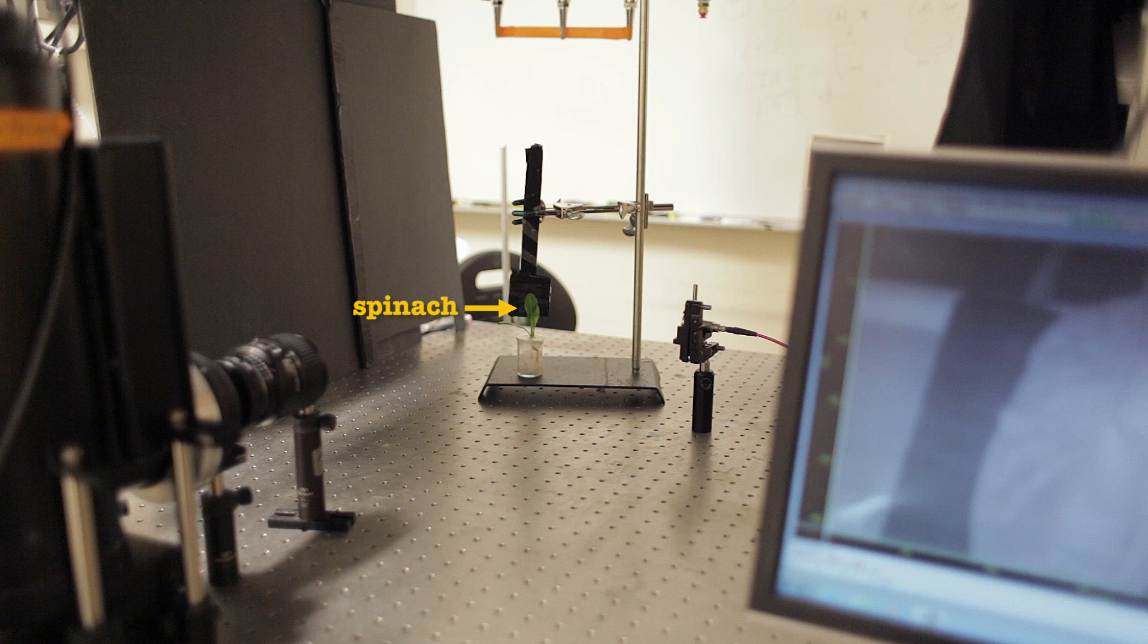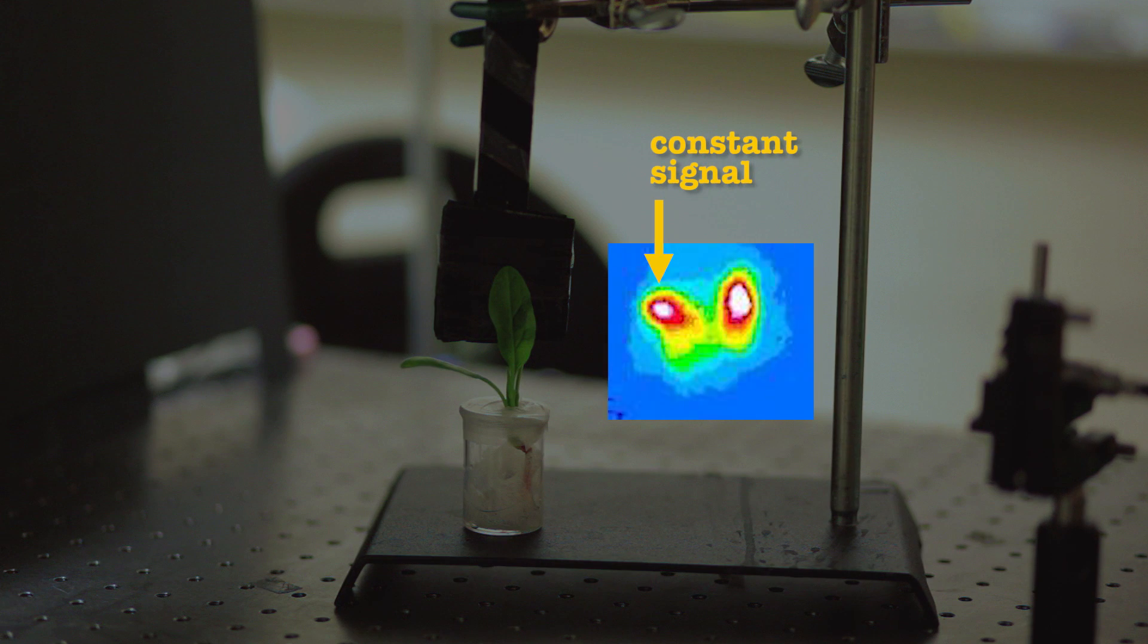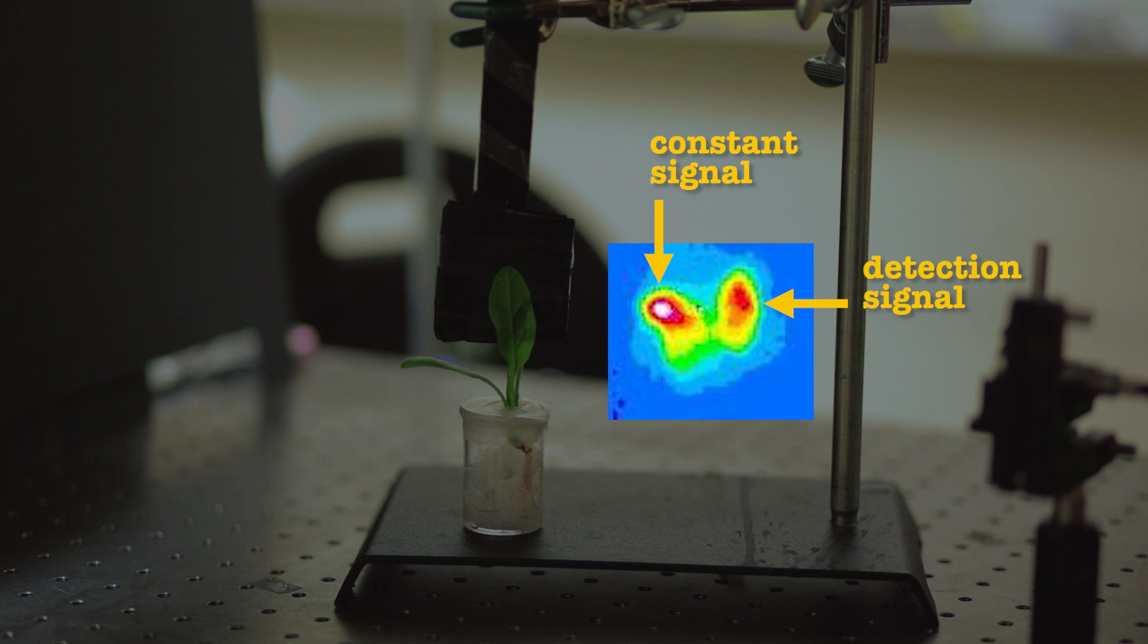These carbon nanotubes emit a fluorescent signal that can be read with an infrared camera. Some of the embedded nanotubes emit a constant fluorescent signal that serves as a reference, while others emit a signal when an explosive compound is detected. Having both makes it easier to determine if the explosive sensor has detected anything or not.